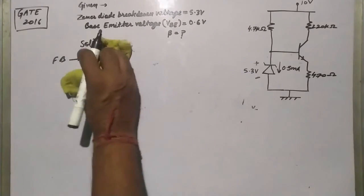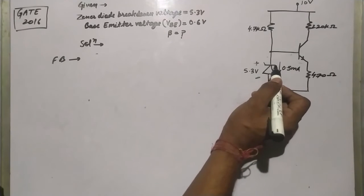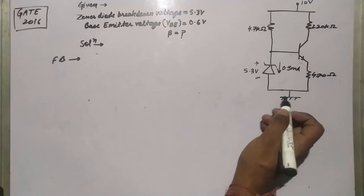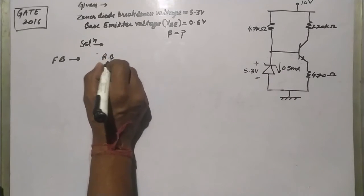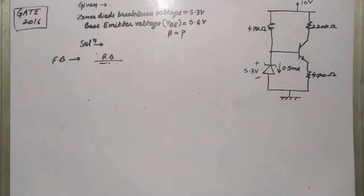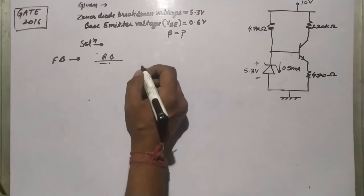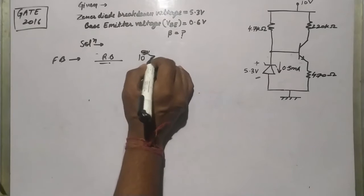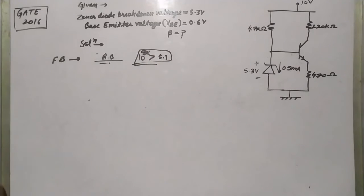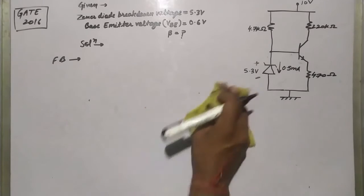Let's check in our circuit in which region this Zener diode is working. The N terminal is connected to the positive voltage and the P terminal is connected to ground, so it is in reverse bias. The voltage at the N terminal is 10 volts, which is the reverse bias voltage applied across it, and since 10 volts is greater than 5.3 volts, it is working in the breakdown region.